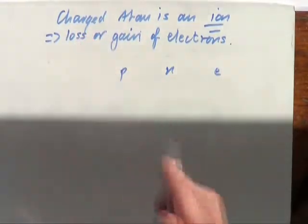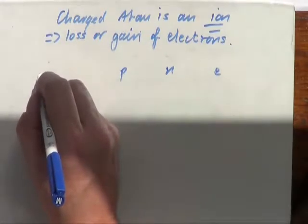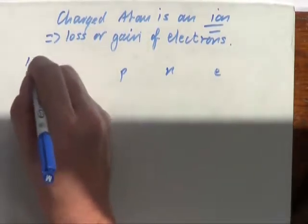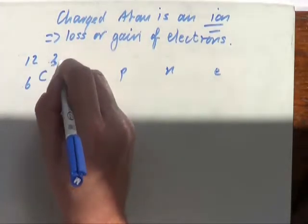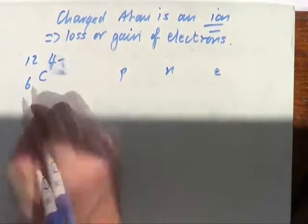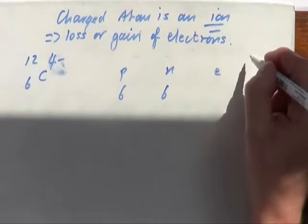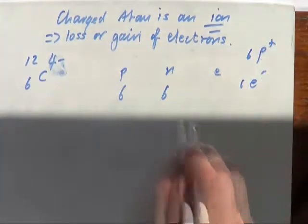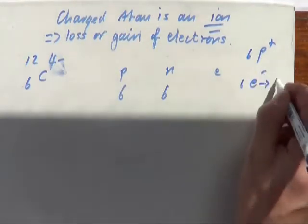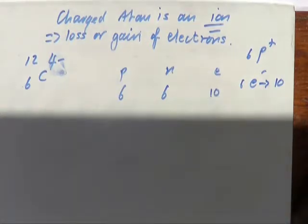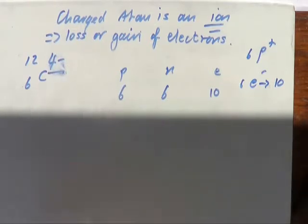Last one — carbon with a 4− charge, 12 and 6. Protons must be six, neutrons must be 12 minus 6 which is six. We started off with six protons and six electrons. It's now got a 4− charge, so it must have four more negatives than positives — so this also has ten electrons.